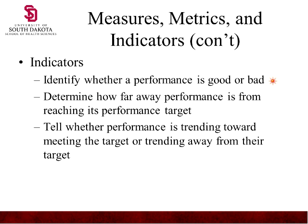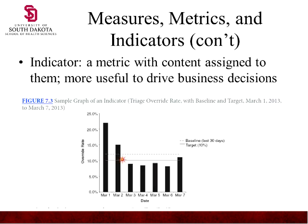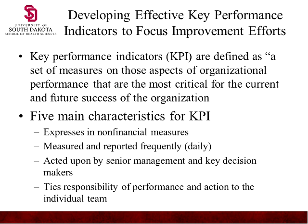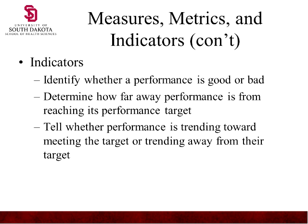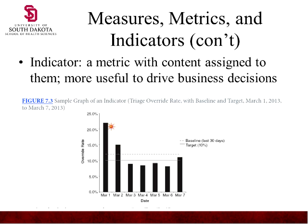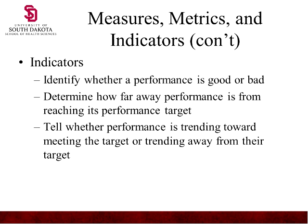Indicators identify whether performance is good or bad — positive or negative — and determine how far performance is from reaching a target. They also tell whether performance is trending toward meeting the target or turning away from it. If a process change was put in place partway through, we might see an improvement trend. If no change occurred, we need to find out why certain days are high and others are low.